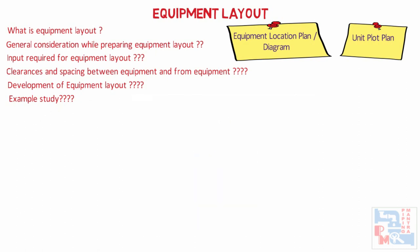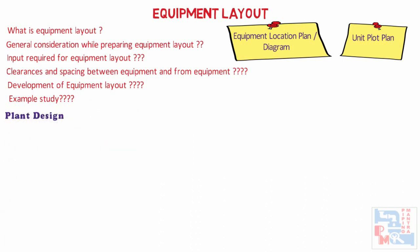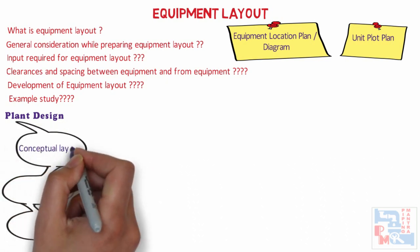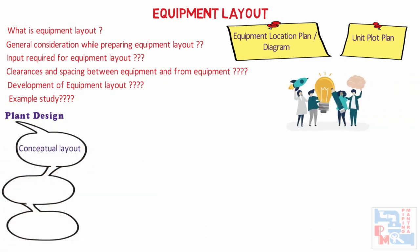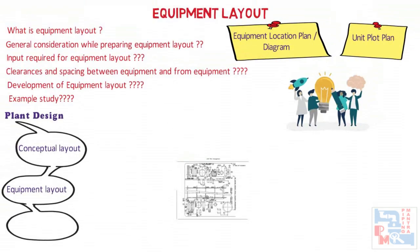Without further ado, let's move on to today's topic. In terms of layout, normally any plant is designed in three stages: Conceptual Layout, Equipment Layout, and Piping Layout.